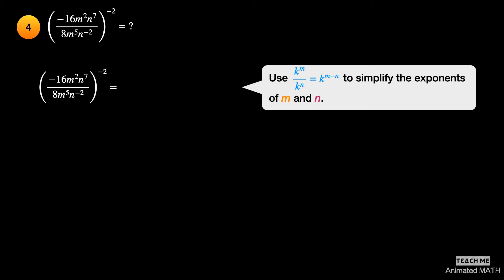First, simplify the terms inside the parenthesis. Negative 16 over 8 is just negative 2. Use the sixth property for the m and n terms. The new exponent of m is 2 minus 5, or negative 3. The new exponent of n is 7 minus negative 2, or 9.